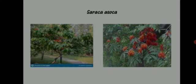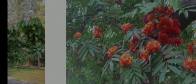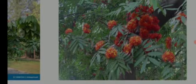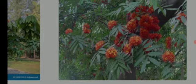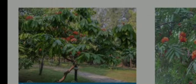This is the plant Saraca asoka. There is a plant called Ixora in the family Rubiaceae which has a similar inflorescence, but the difference is that Saraca asoka has bipinnately compound leaves, while Ixora has simple leaves. This is a small tree, Saraca asoka, belonging to the family Caesalpiniaceae; the parts used are the bark, flowers, and seeds.